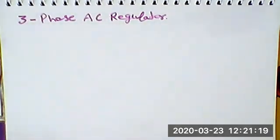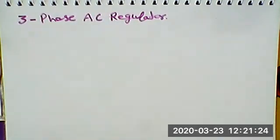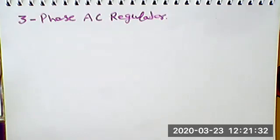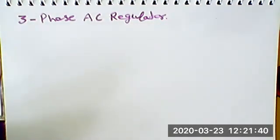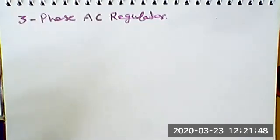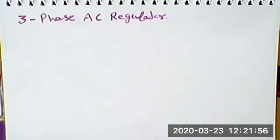As we discussed, 3-phase AC regulators — first of all, AC regulators are used to change the output AC voltage. You have a fixed AC voltage and you want to change the value of output AC voltage. In that case, we use an AC regulator. The output will be AC and it changes without changing frequency. Single-phase AC regulator we have already discussed. Now, 3-phase AC regulator.